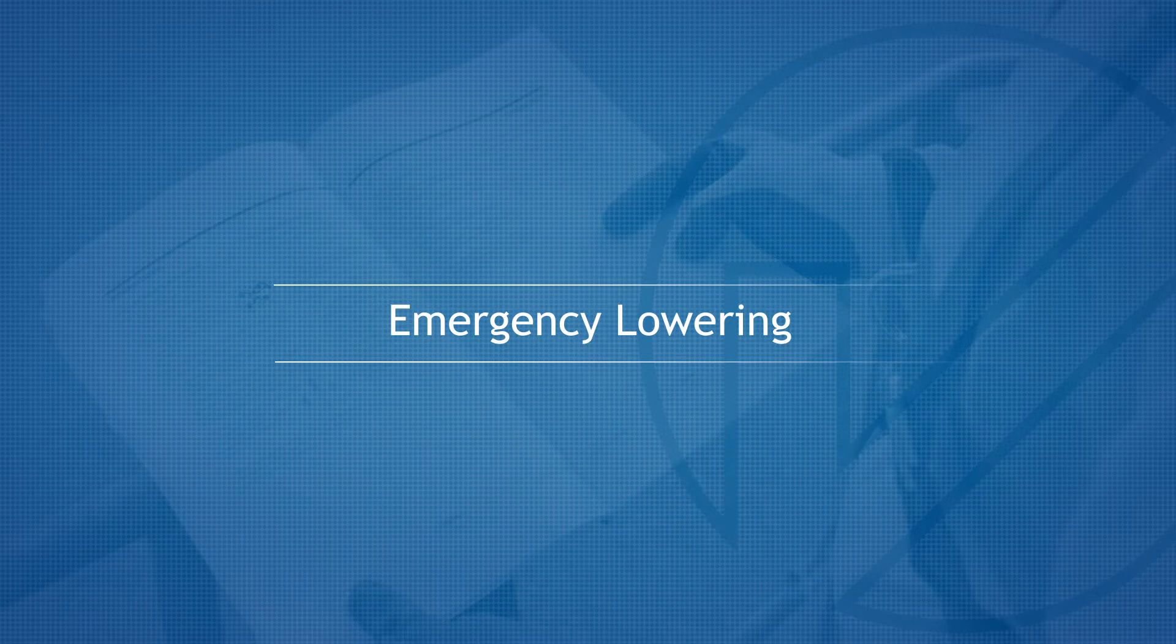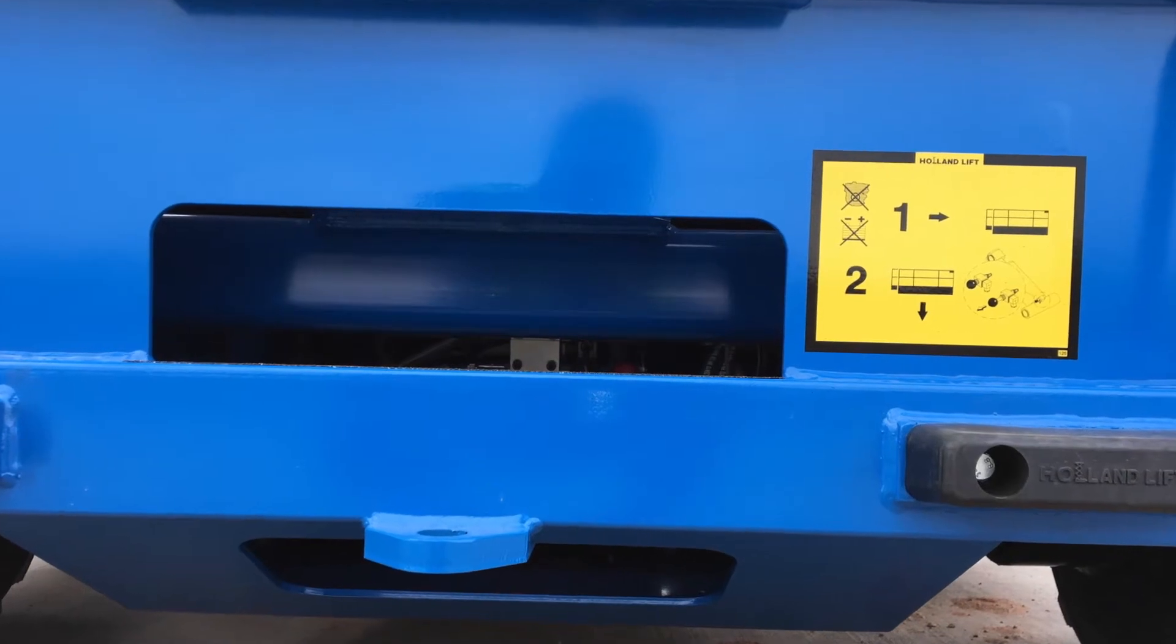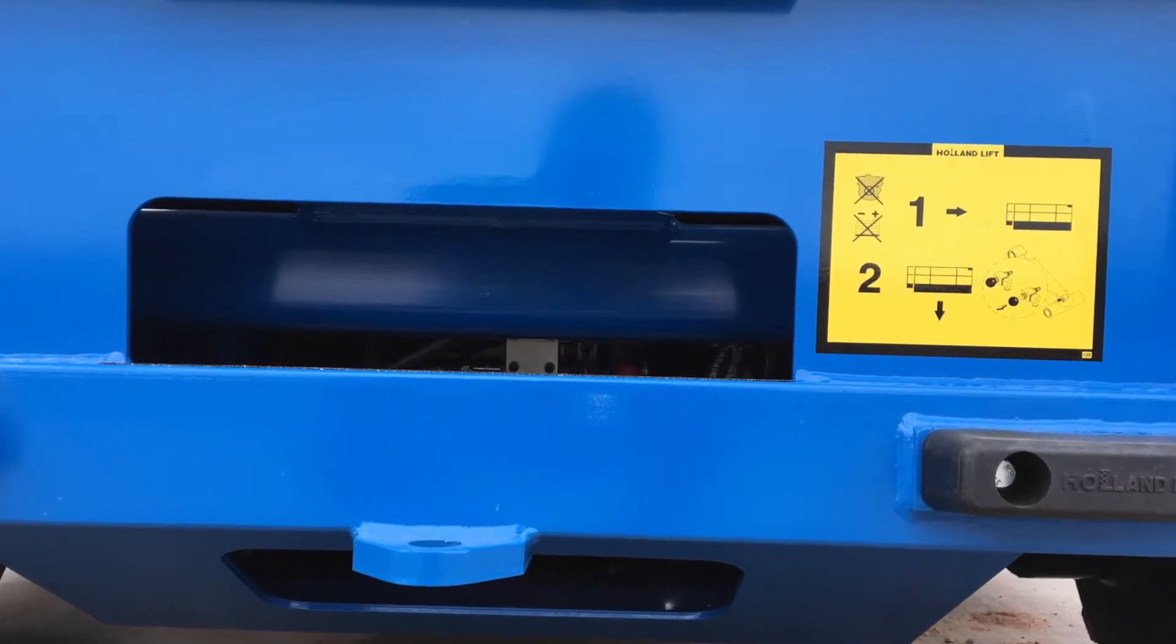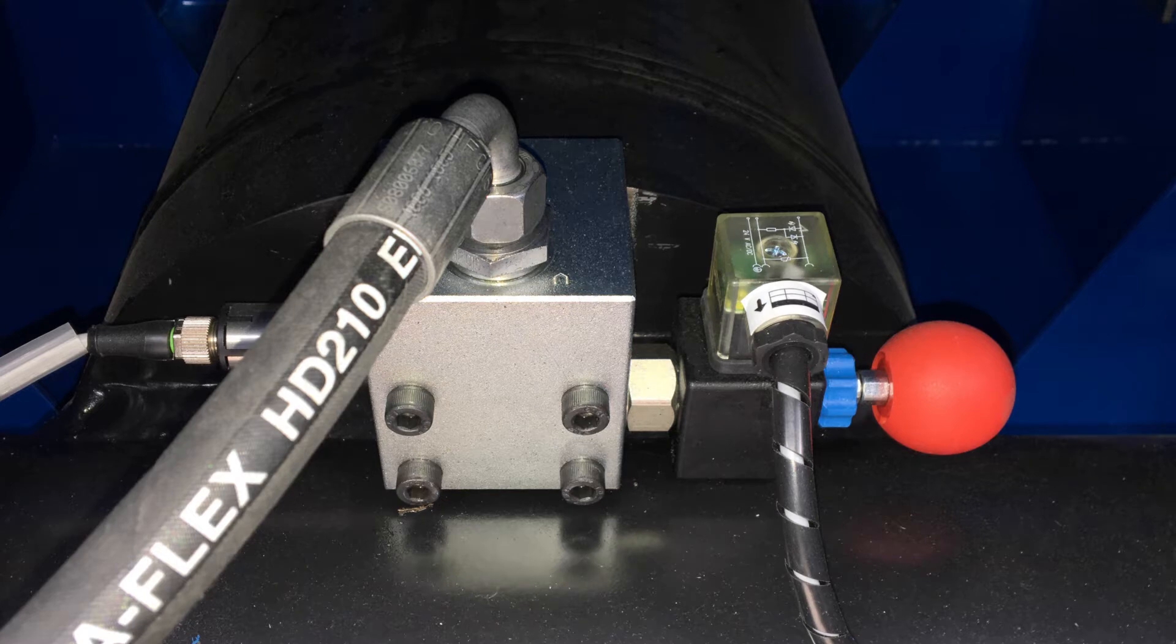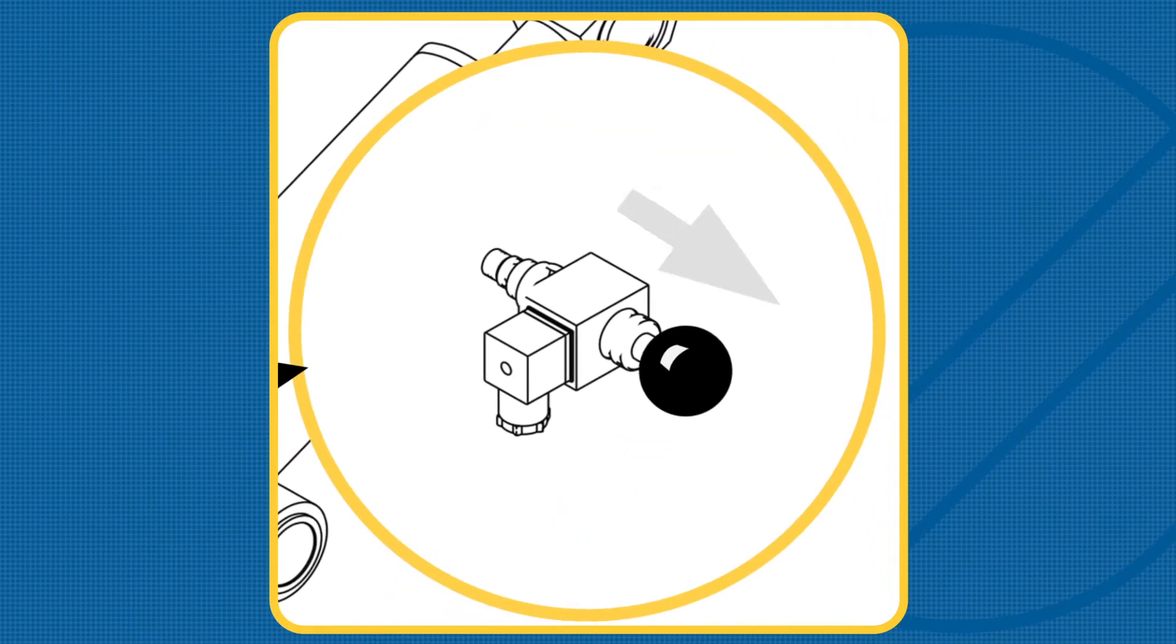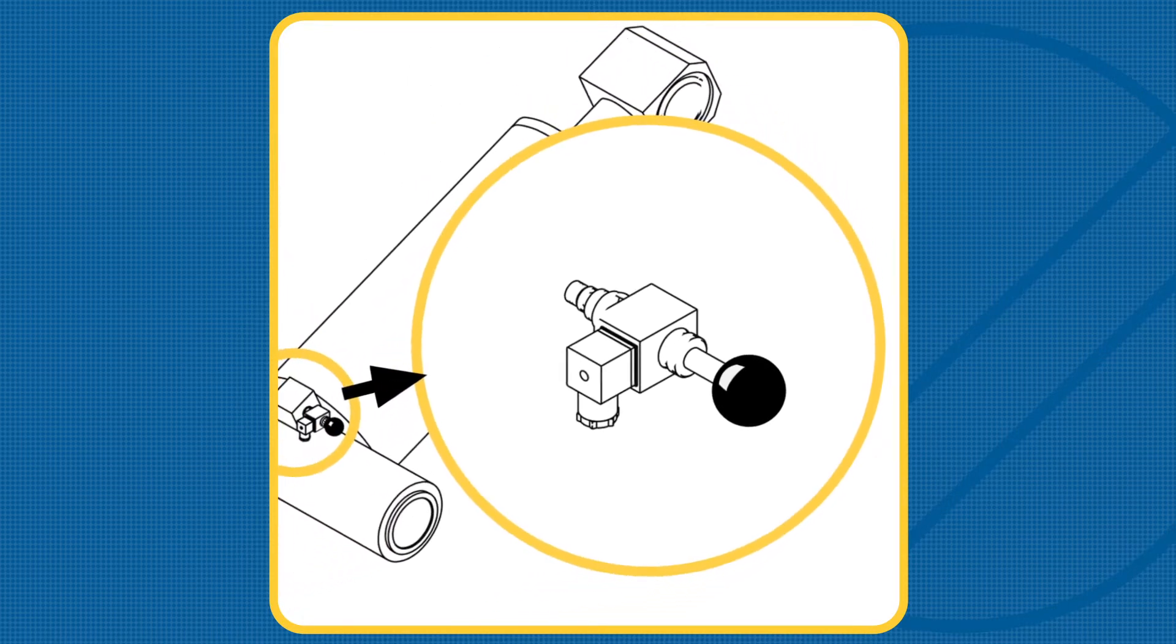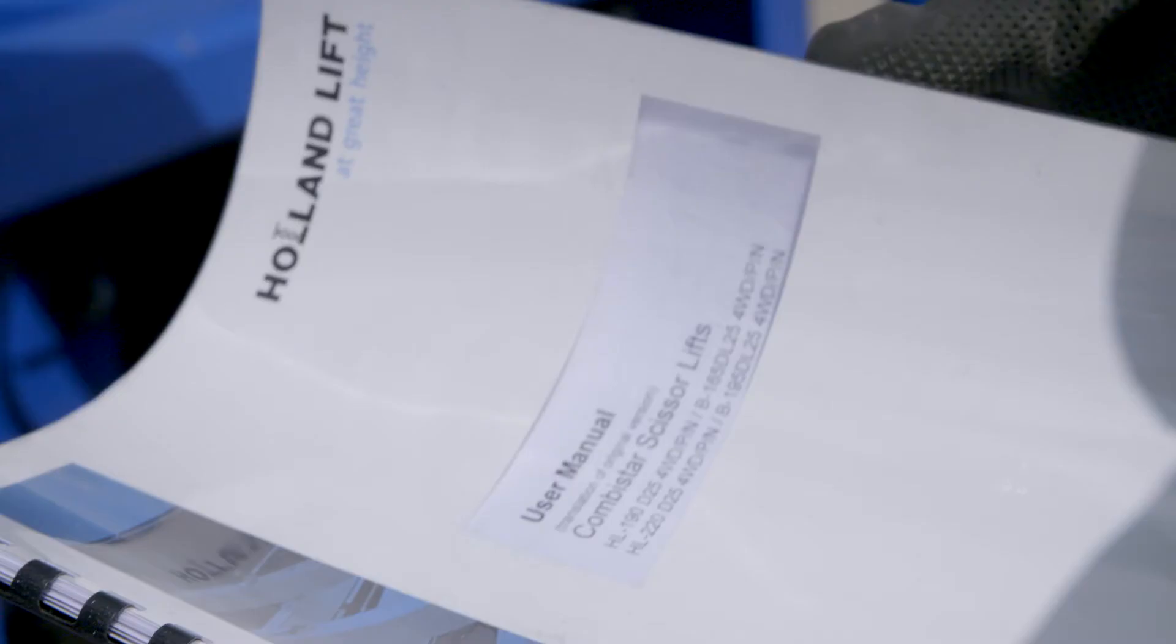Emergency lowering: In the unlikely event of complete power failure, the manual descent valve can be used to lower the platform. This can be activated by pulling the button on the valve. Please consult the operator's manual for more information on how to locate and operate the manual descent valve. Alternatively, contact Nationwide Platform's technical support team.